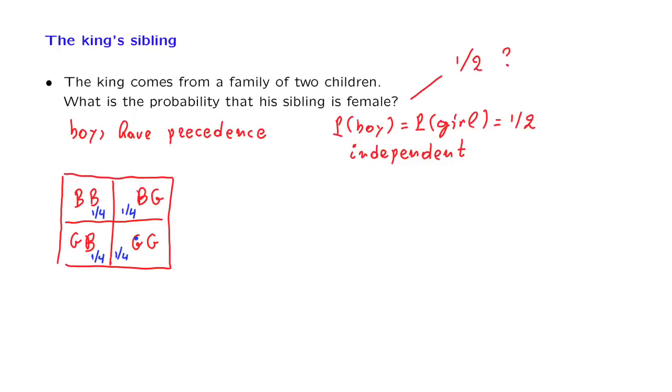one of the outcomes becomes impossible, namely the outcome girl-girl, and we're restricted to a smaller universe with only three possible outcomes.